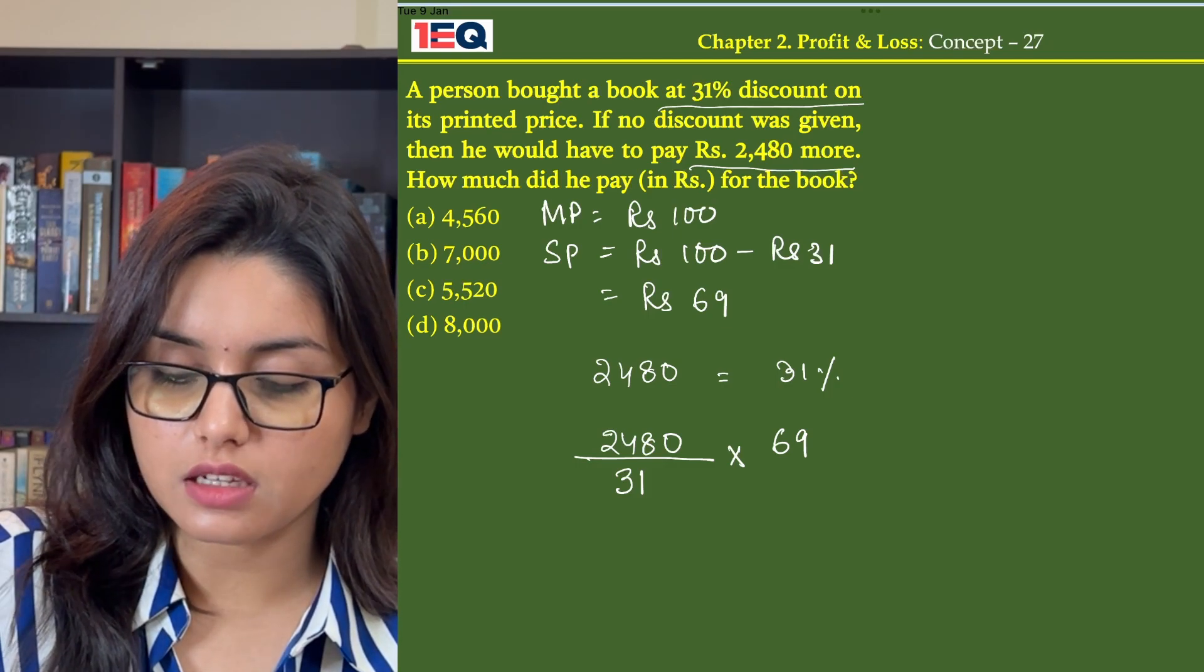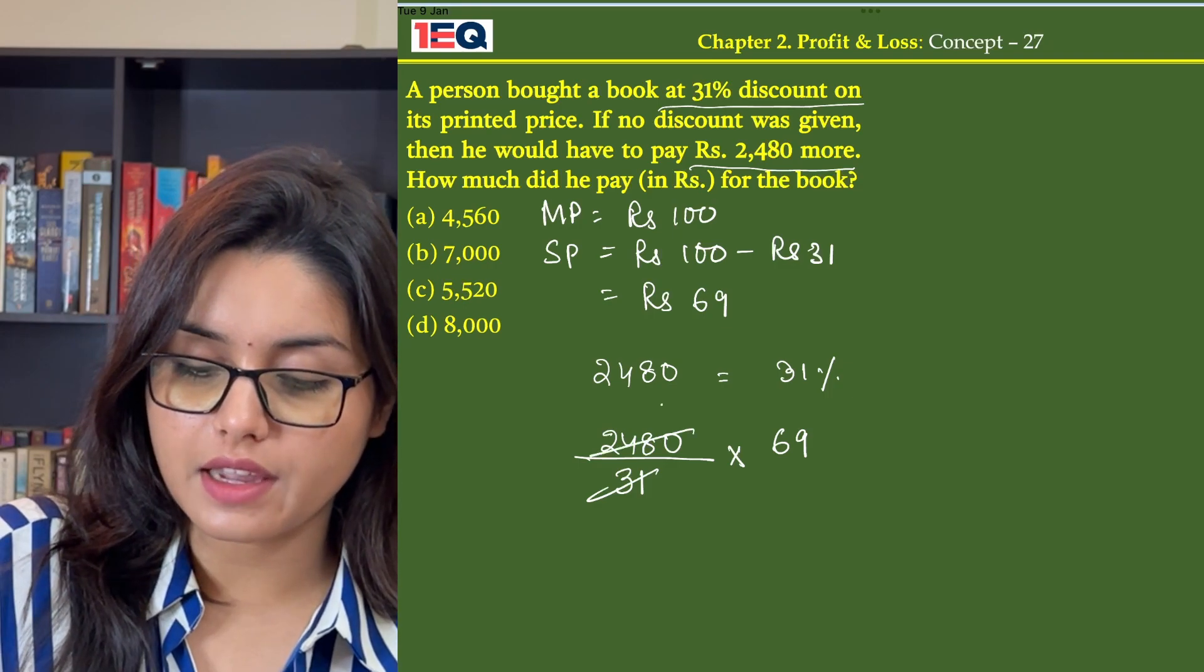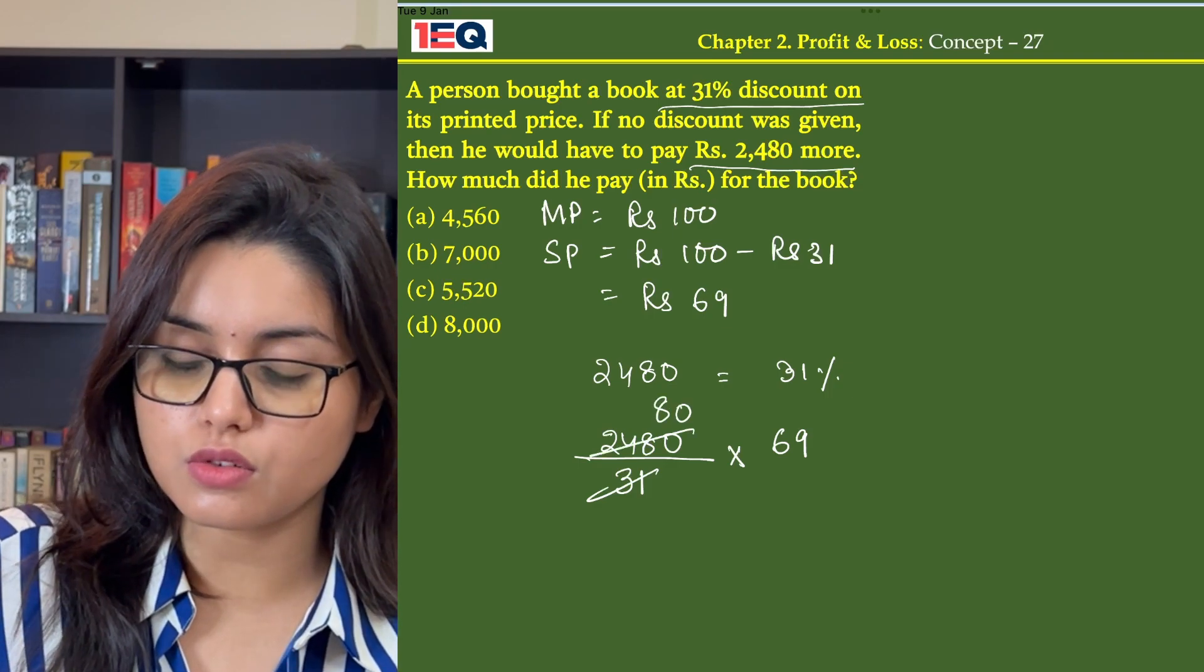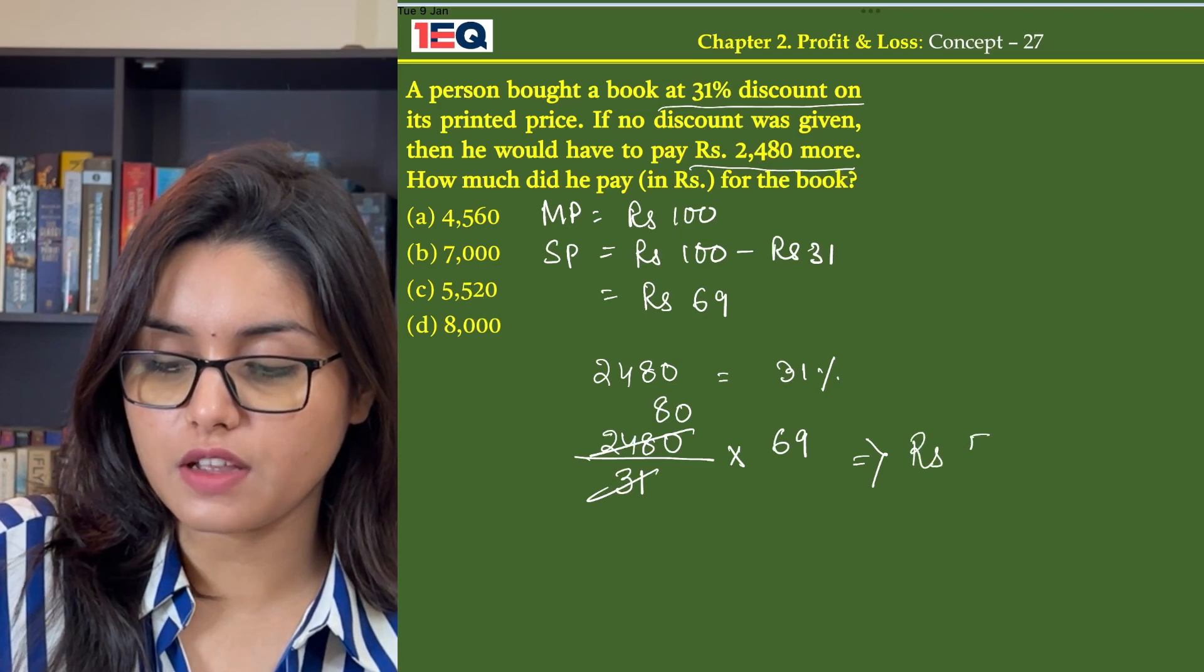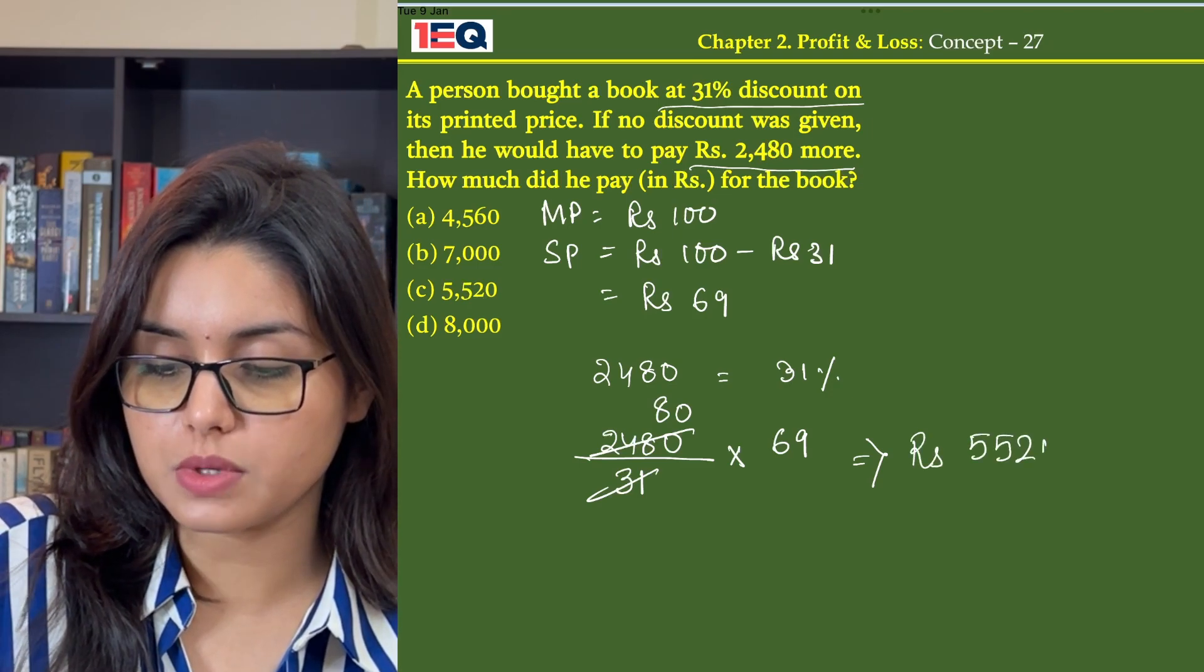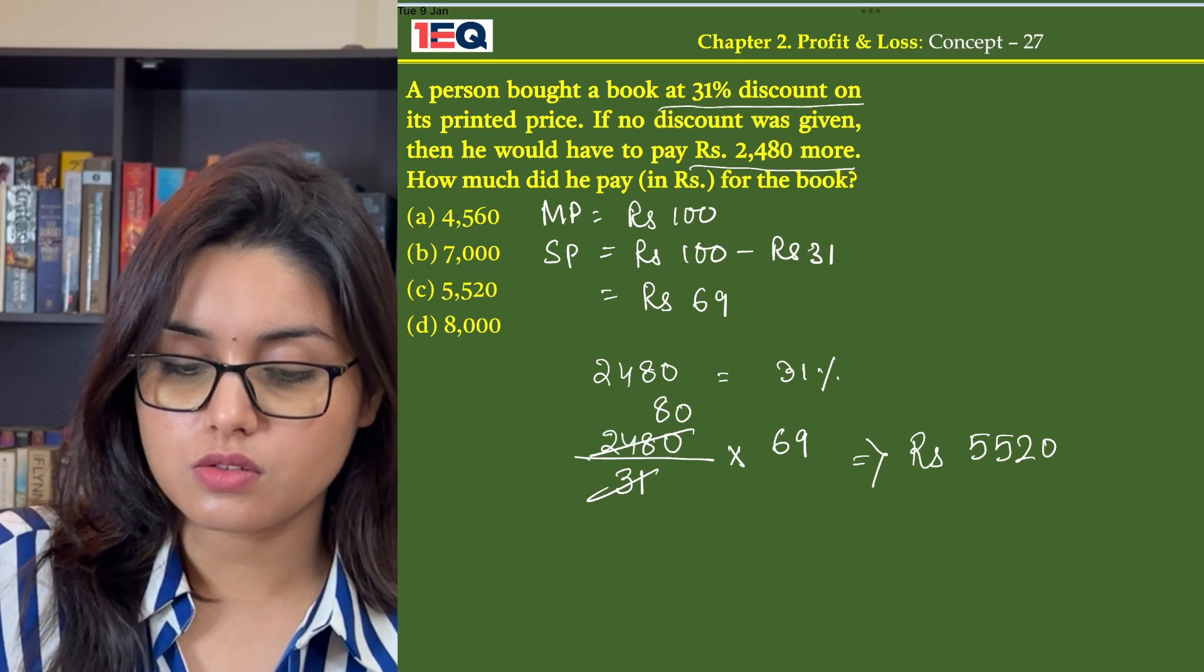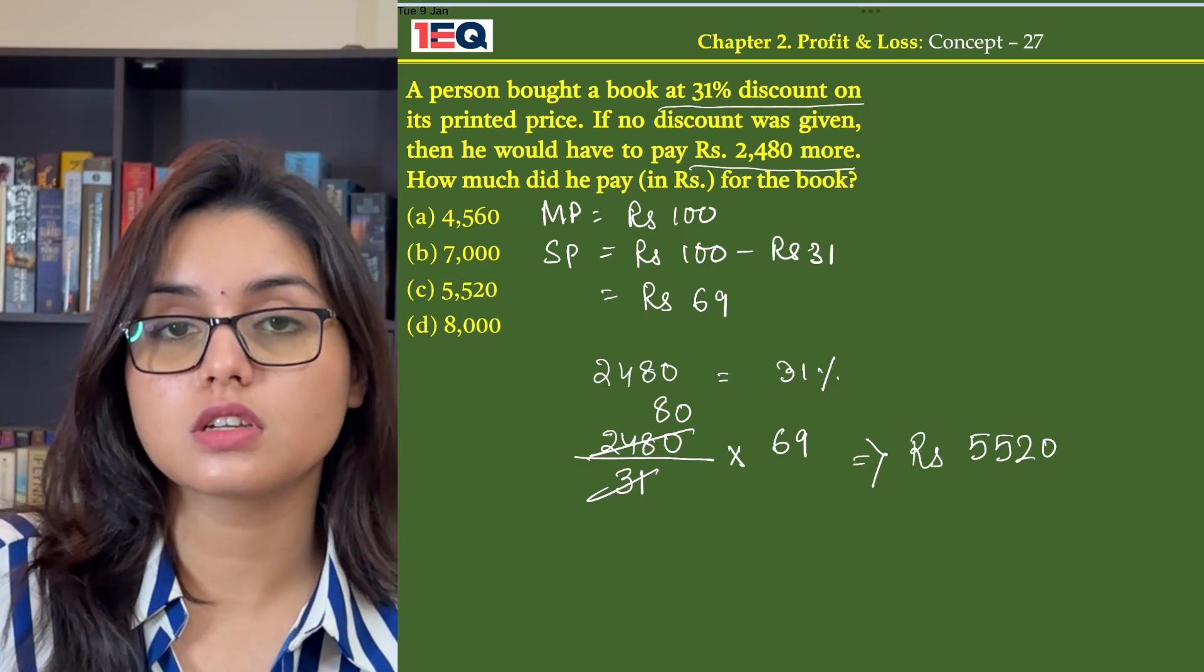So on dividing, 2,480 divided by 31 equals 80, and 80 multiplied by 69 gives Rs. 5,520. So our answer is option C.